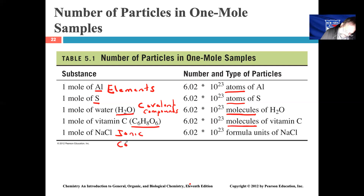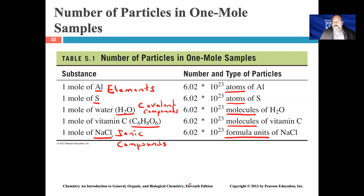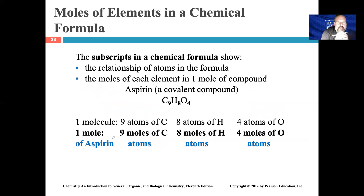For ionic compounds, if I said go to the lab and get me a mole of an ionic compound, we count that in terms of what are known as formula units. Covalent compounds are made up of molecules; ionic compounds are made up of formula units. So one mole of sodium chloride, an ionic compound, would be 6.02 × 10²³ formula units of sodium chloride.